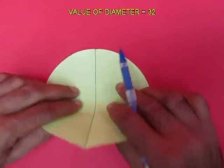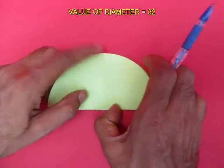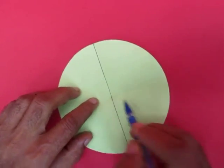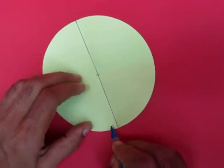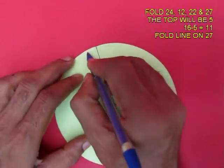The value of this diameter would be 32. Now fold at right angles to locate the center. This is point zero, the middle is 16 and the top is 32.